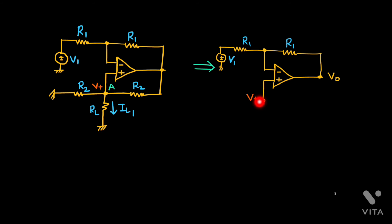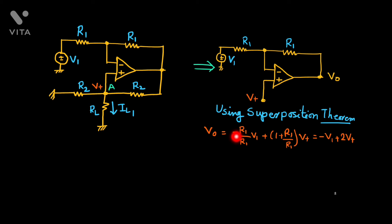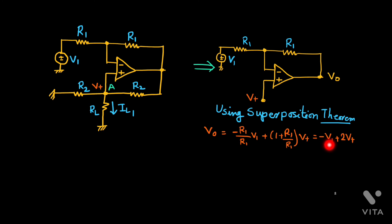By using the superposition theorem in a single line, we find the output voltage. The inverting gain is minus R1/R1 with inverting voltage V1. The non-inverting gain is 1 plus R1/R1, and the non-inverting voltage is V+. Therefore, V0 equals minus V1 plus 2V+.